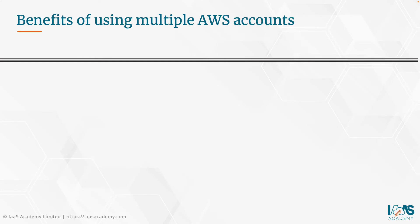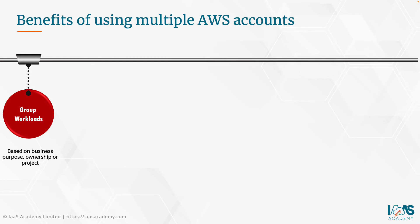AWS recommends that you set up multiple accounts as your workloads grow in size and complexity. Using a multi-account environment is an AWS best practice that offers several benefits. With AWS multiple accounts, you can group workloads based on business processes and ownership. With multiple accounts, you can cater for different business units and their individual processes which may differ from each other. Isolation of business units can help them operate with greater decentralized control.